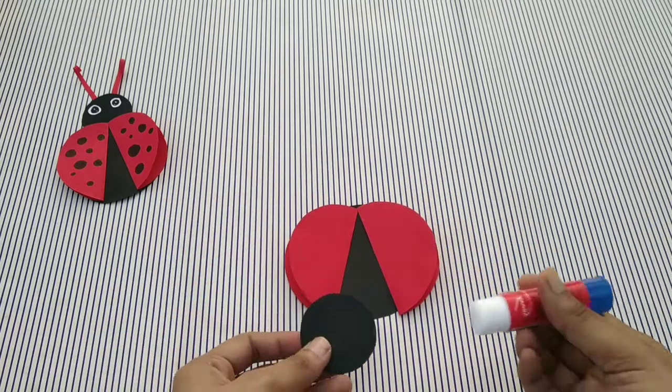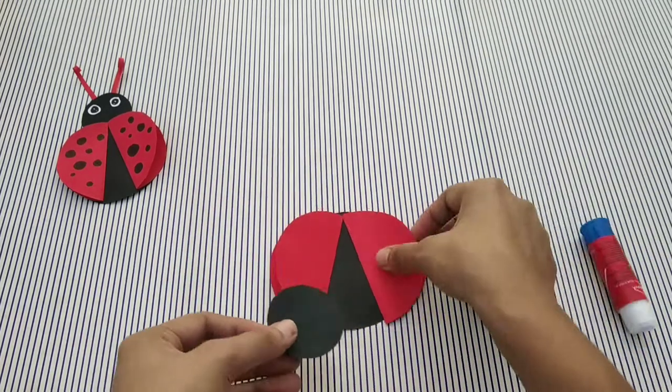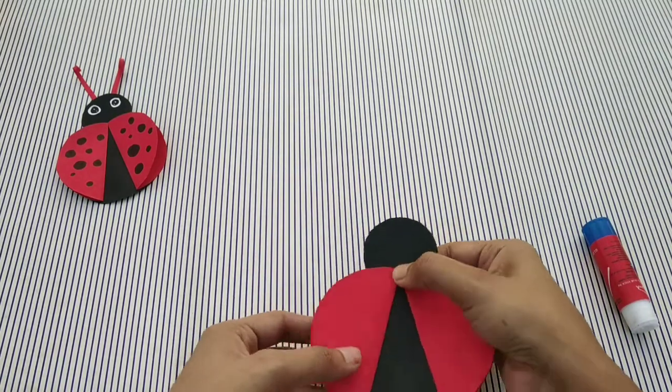Now we have to stick the small circle under the big circle to make the head of a bug.